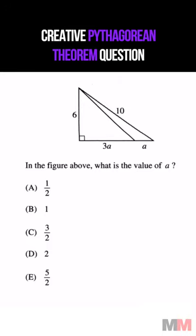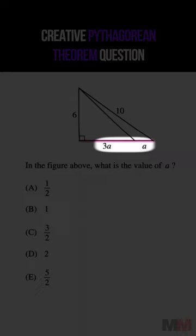In the figure above, what is the value of A? I thought this was an area question, but it's actually a Pythagorean theorem one. The total length of this pink line segment is 4A. You just have to add these up.